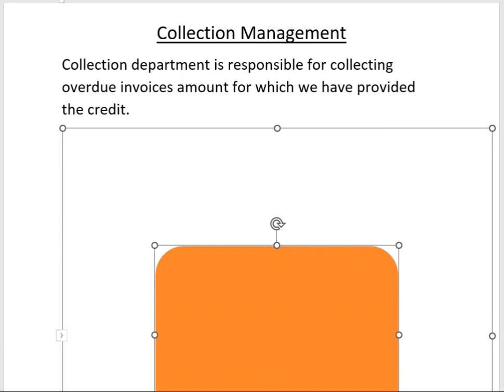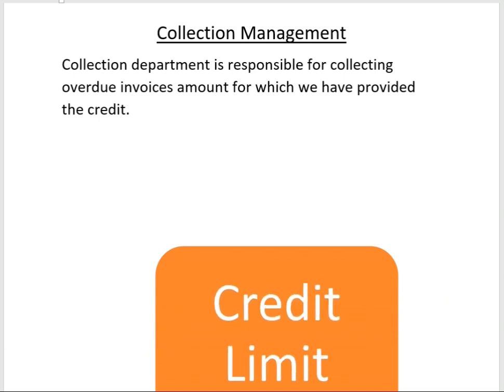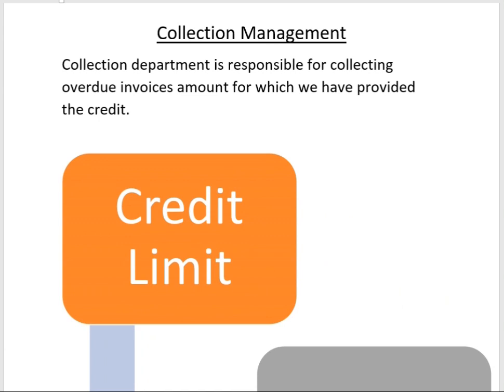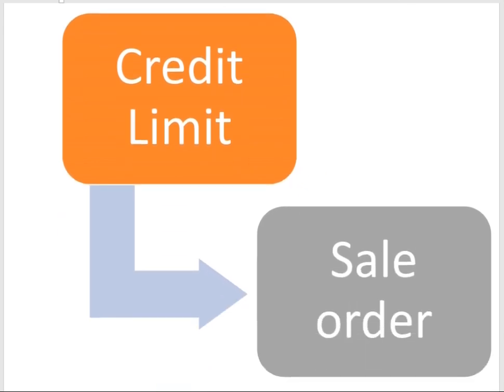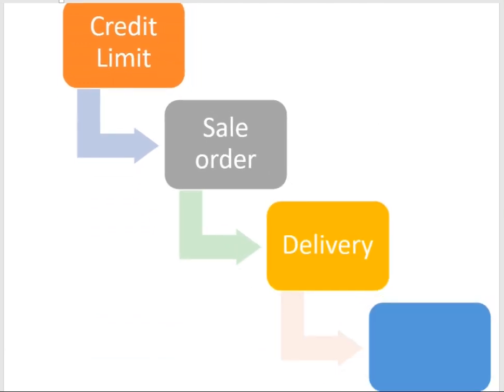The business process starts by assigning a credit limit to the customer, after which a sales order will be generated against that credit limit. Then a delivery document will be generated, and after delivery, a billing document will be posted in Accounts Receivable. The billing document is the customer invoice, which is also posted in Accounts Receivable.